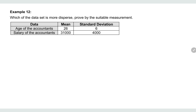Example 12: Which of the data sets is more dispersed? Prove by suitable measurements. You are given a table with two data sets — first, about the age of accountants, and second, about the salary of accountants.